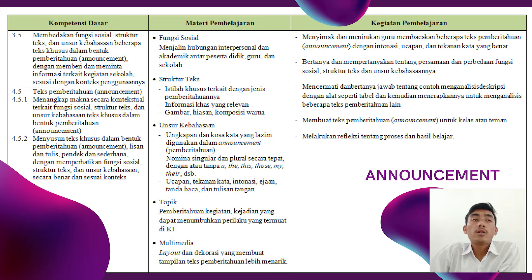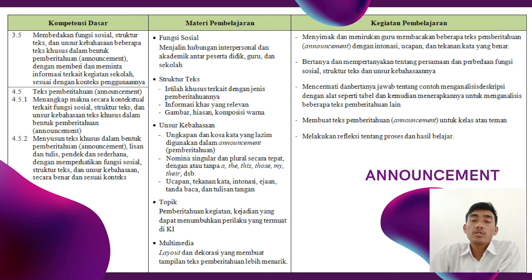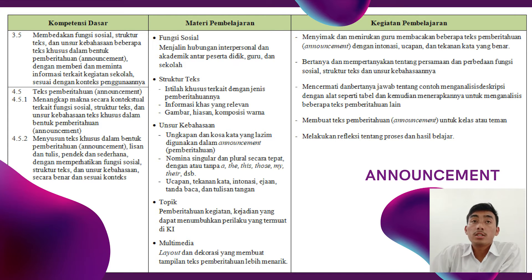The next material is related to activity in school. For the skill competence, the summary of this competence is how the student can make or arrange an announcement text. For the learning material, it is divided into several points. One is social function, which is interpersonal and academic between teachers and school. Then there is structure text, which includes the special terms with details, the relevant information, the image, and the composition of color.